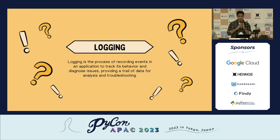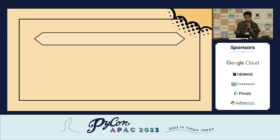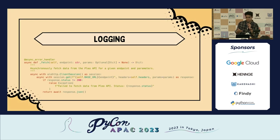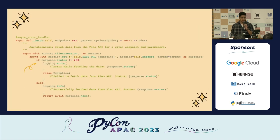Logging provides a window into the operation of any application. It doesn't just help us diagnose issues, but also understand performance metrics. In Python, we can use the robust logging module. For example, this straightforward fetch function asynchronously fetches some banking card information from the Plio API. We can call logging.error or logging.info by passing the statements or the response status. But if we run this, we'll get nothing.